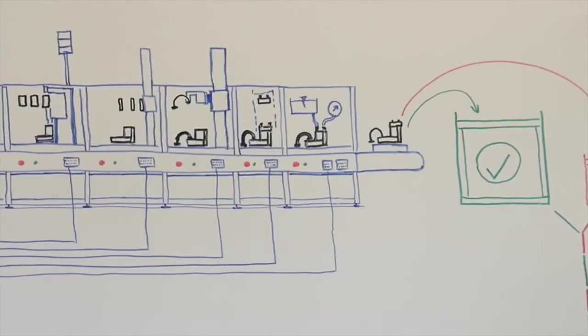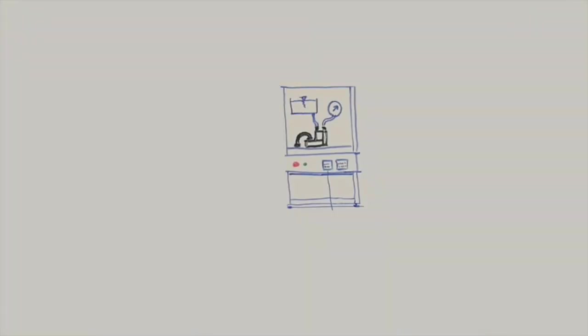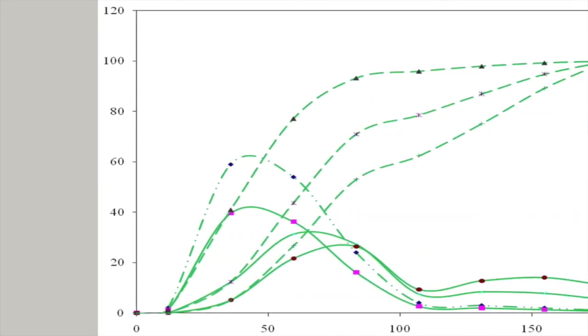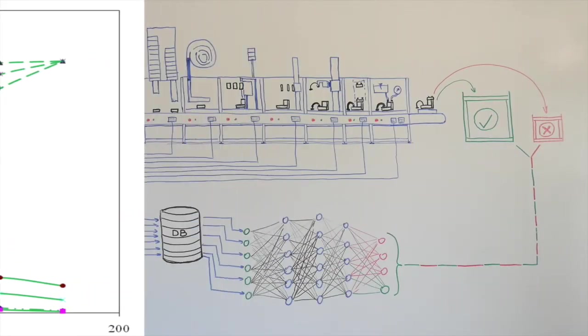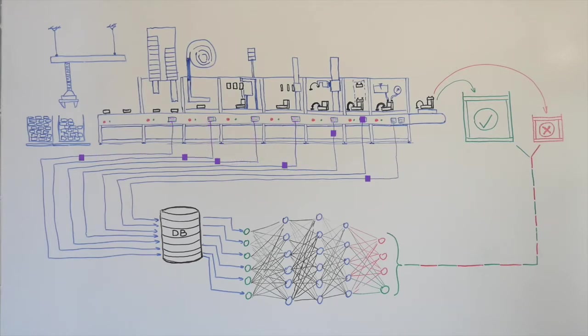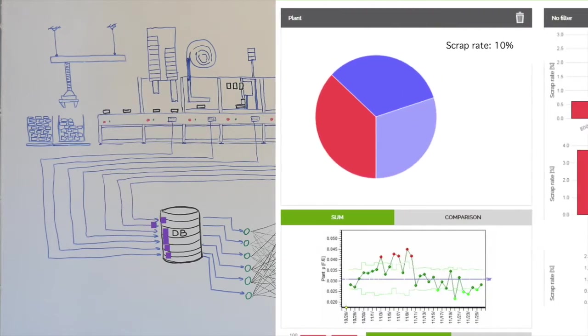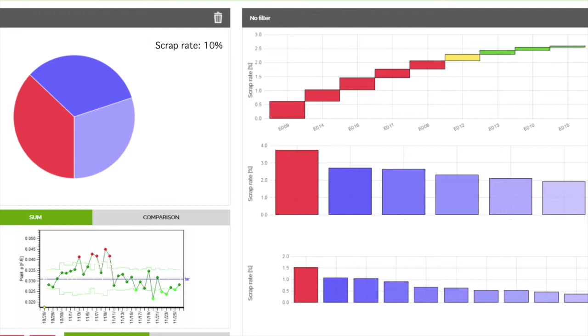The production line included an end-of-line measuring device, which was there to check if the pump characteristics meet the specification. One of the features of the modern production system was a comprehensive data acquisition from the assembly operations. The production line produced 10% scrap. This is not bad for a pilot line.